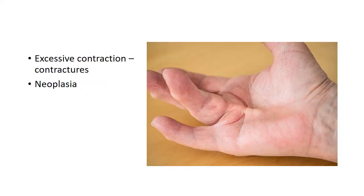We saw that usually the wound contracts to one-third to one-fourth its size and this contraction is normal, but sometimes there can be excessive contraction leading to contractures — for example, Dupuytren's contracture. And sometimes, rarely, the scar may give rise to neoplasia or cancer as well.